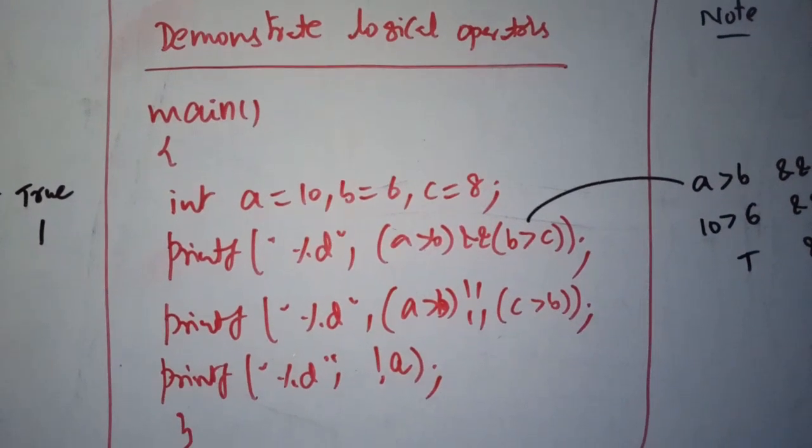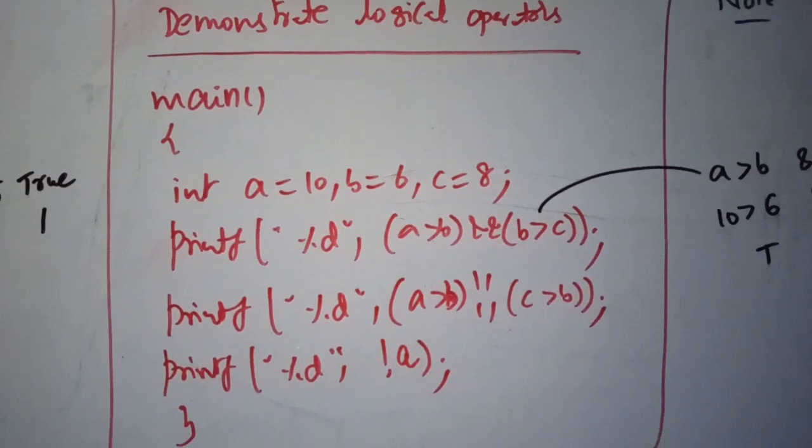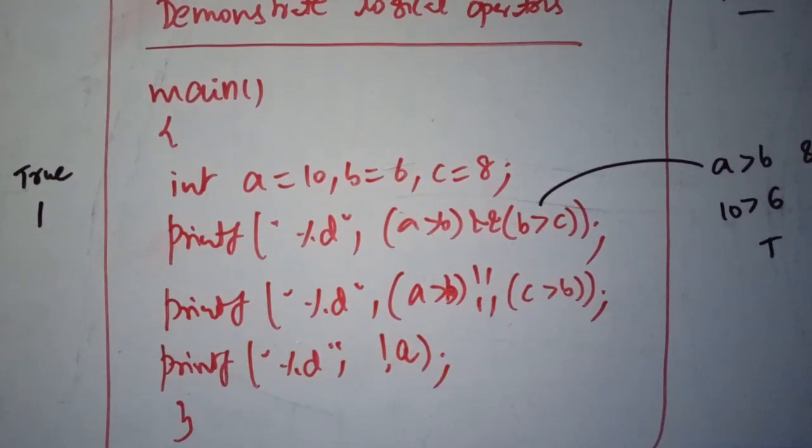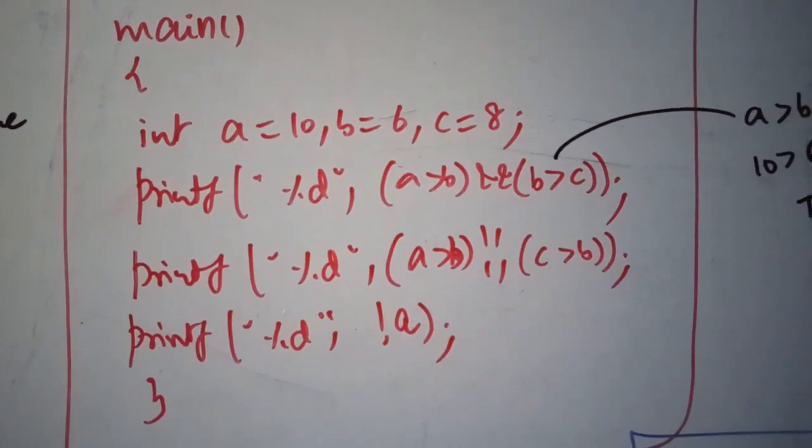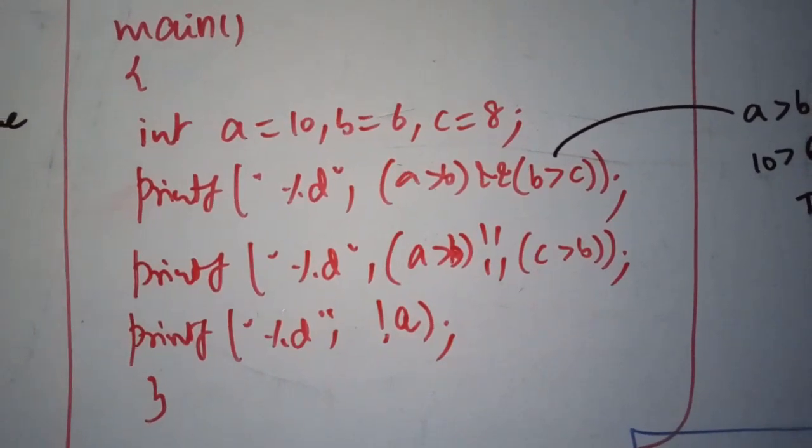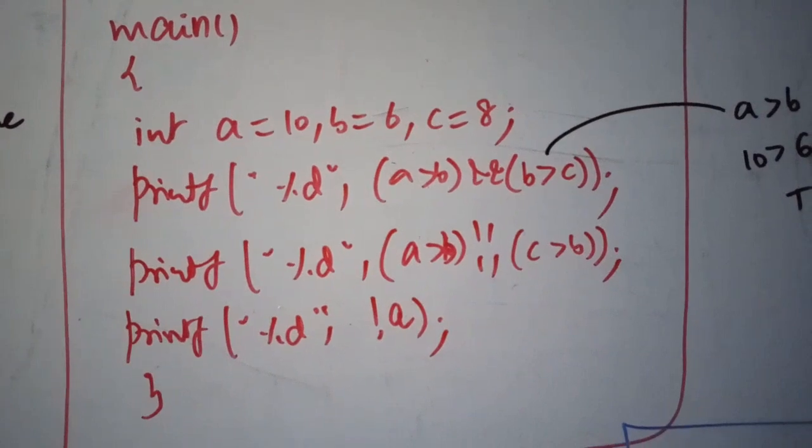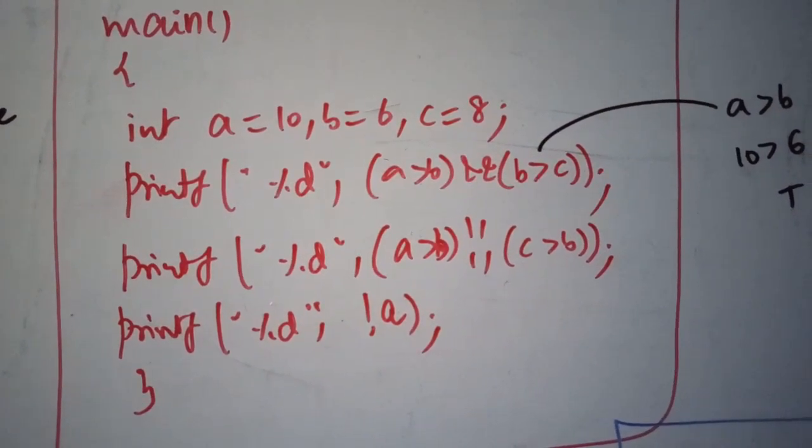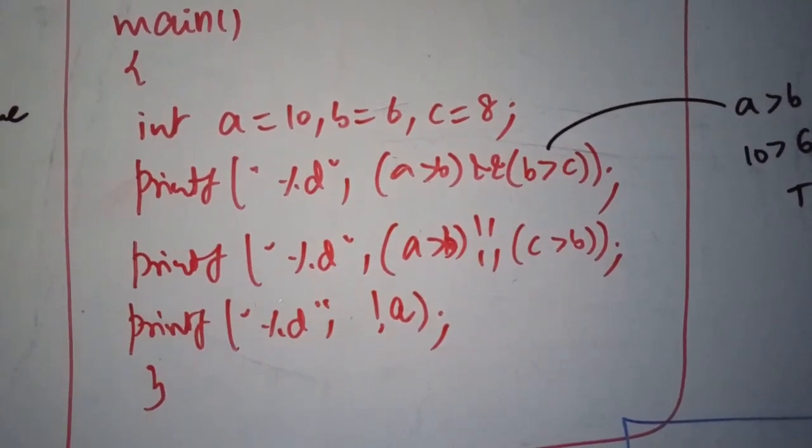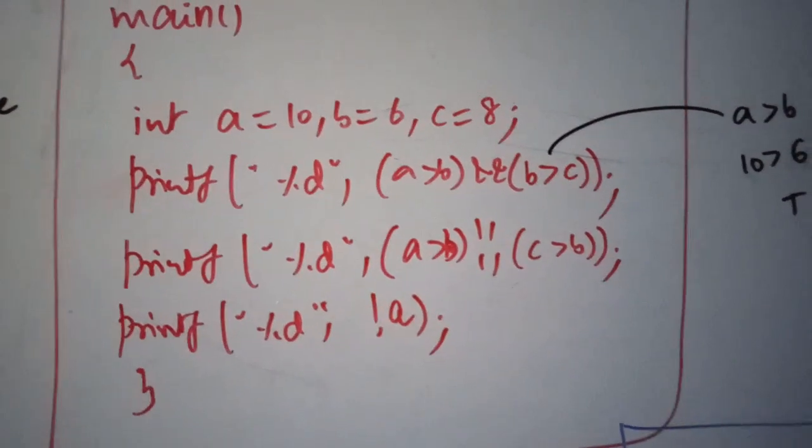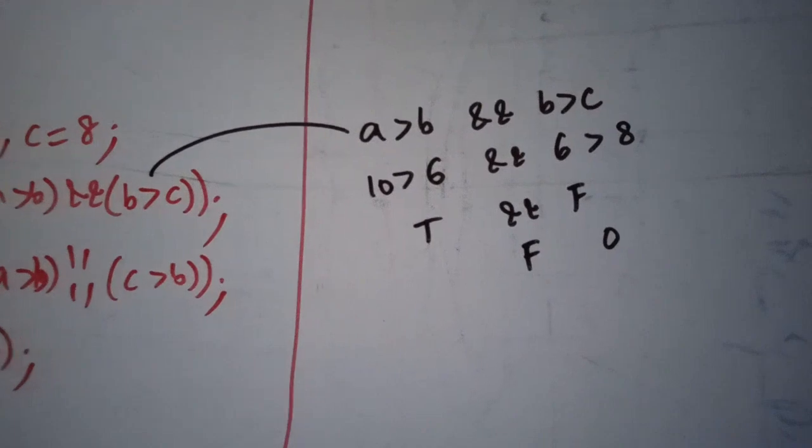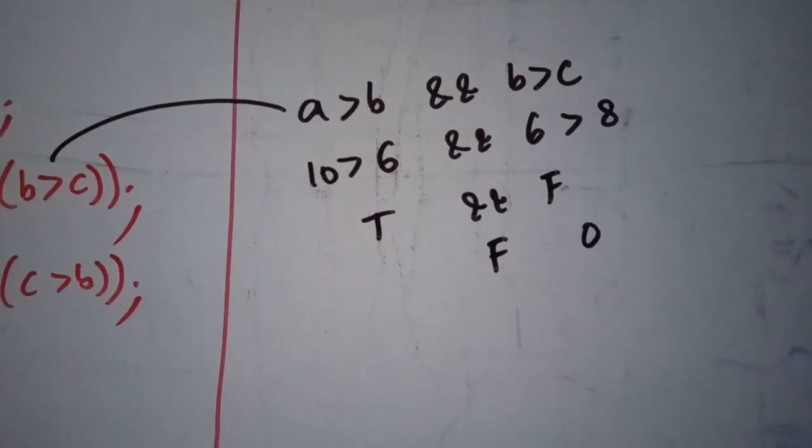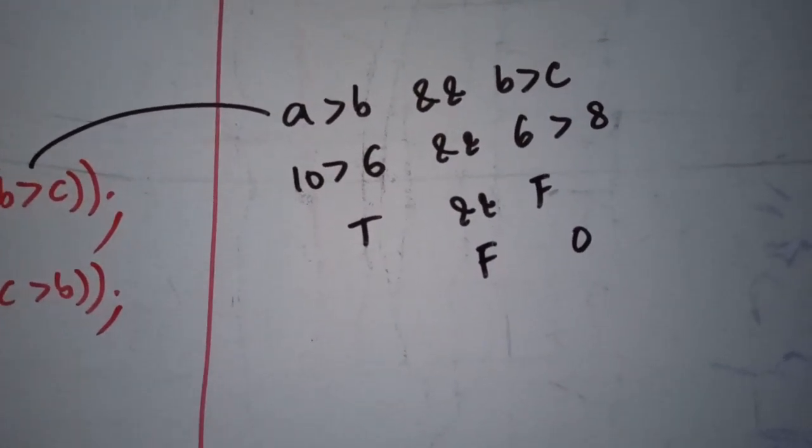So Logical Operators program demonstration. Now we have three variables here. a is 10, b is 6 and c is 8. Look at the conditions clearly. First one is a greater than b and b greater than c. a greater than b means 10 greater than 6. b greater than c is 6 greater than 8. So 10 greater than 6 is true and 6 greater than 8 is false, true and false is false. So the result is zero.